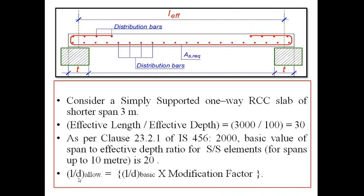The L/d allowable — that is, the maximum L/d — is given by L/d basic multiplied by the modification factor, which we just saw in the graph of IS 456.